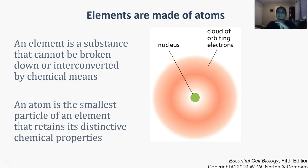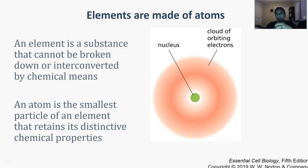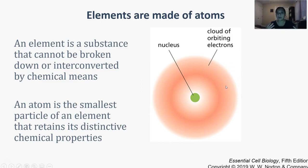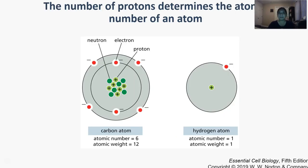Starting from the most basic level, elements are the basic structural components made of atoms. An element is a substance that cannot be broken down or interconverted by chemical means — that's your basic unit of a chemical reaction. It is the smallest particle of an element that still retains very distinctive properties. Elements basically contain a central very dense nucleus, which contains the protons and neutrons, and then a cloud of negative electrons orbiting around it in a very distinct manner. The nucleus is the one providing mass to that atom.